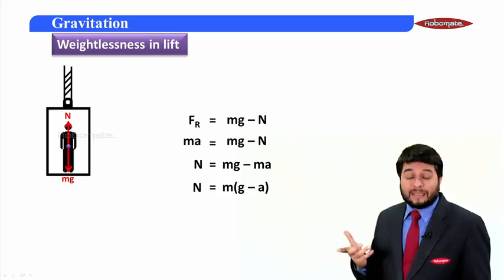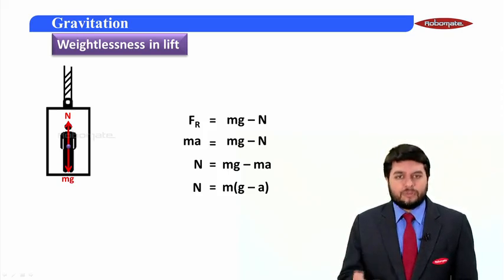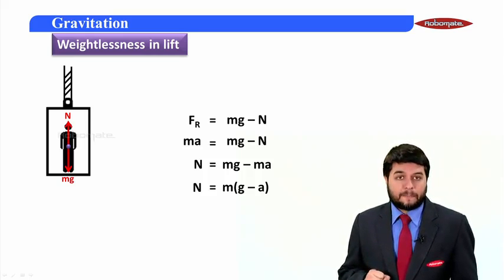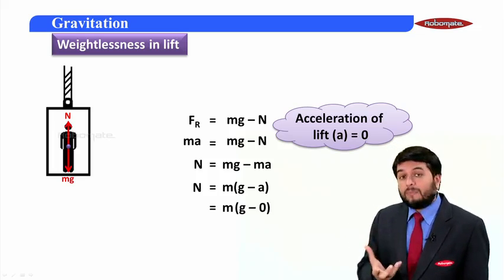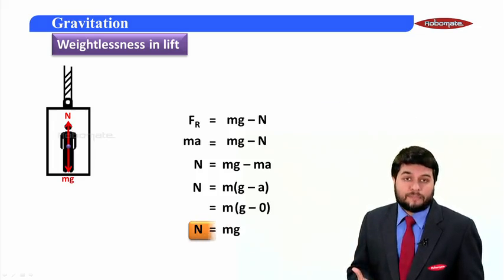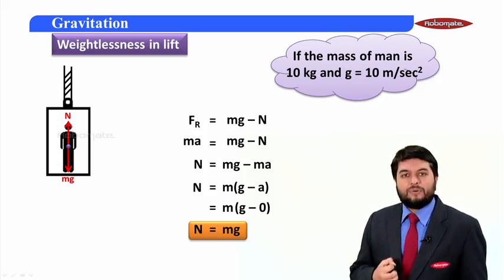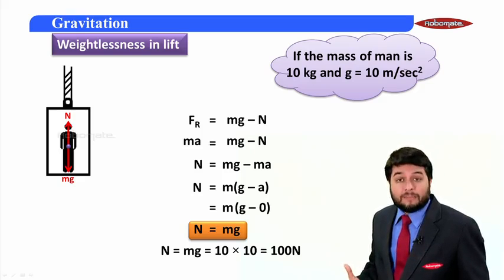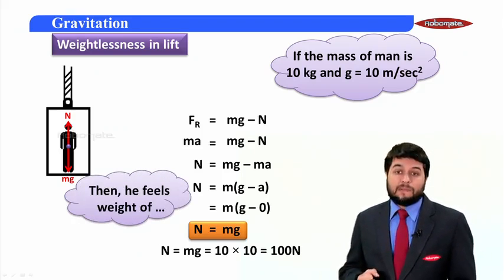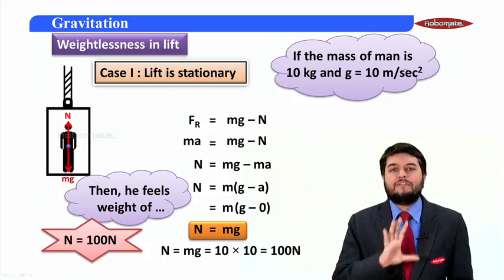So remember this equation, because I will use it to explain weightlessness mathematically. If the lift is initially stationary, then a = 0, and the normal reaction equals mg. For example, if the person has a mass of 10 kg and g = 10 m/s², the normal reaction felt by the person is 10 × 10 = 100 N. That means he feels a weight of 100 N. This is the first condition — when the lift is stationary.